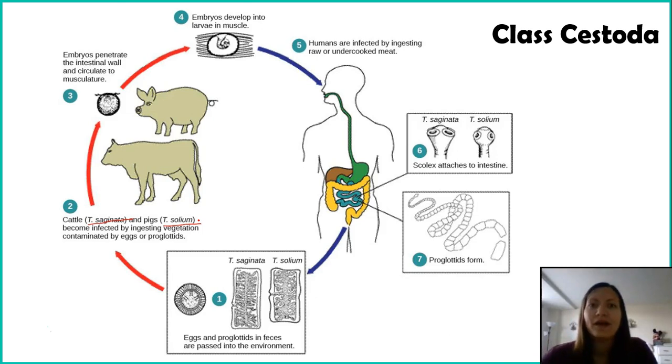That's where we'll end with Phylum Platyhelminthes. Remember, we had three different classes: first, Turbellaria — the free-living ones that aren't parasitic, known for the cool penis fencing they do. The second class was Trematoda, or flukes — these have a mollusk somewhere in their life cycle and are known for the fascinating mind control behavior. Finally, Class Cestoda — our tapeworms, which infect not just humans but many different species. So be careful of what you eat and be careful of becoming a zombie — these flatworms, although they don't seem very terrifying, definitely can be.